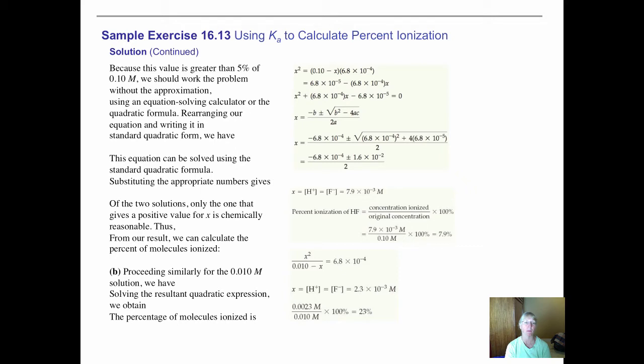Notice what happens if you do the same thing with a 0.01 molar solution as in Part B. Again, you're not allowed to ignore the X. The person substitutes in Ka = 6.8 × 10⁻⁴, we have X² representing the hydrogen times fluoride ion concentration, and the original concentration is 0.01 minus X. It eventually comes out in the form of a quadratic equation. Using the quadratic program in your calculator, you would find that X, the concentration of hydrogen, is 2.3 × 10⁻³. When you turn that into a percent ionization, dividing 2.3 × 10⁻³ by the original 0.01, we get a 23% ionization.